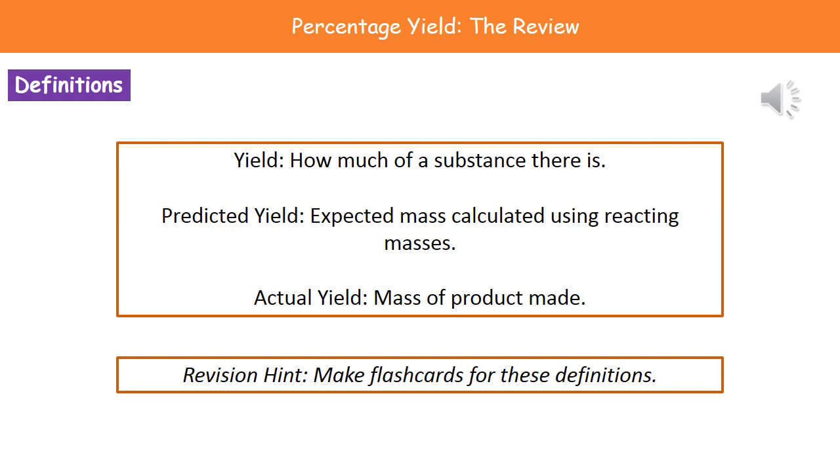First, you need to understand the three key terms. The first one at the top is the yield, which quite simply is just how much of a substance there is. Then we break it down to two different terms. We have our predicted yield, which is the expected mass we get from the balanced chemical equations and calculating it using the atomic masses from the periodic table. And the second one is the actual yield, which is the mass of product we made during the experiment. That's what they'll actually give you in the question.